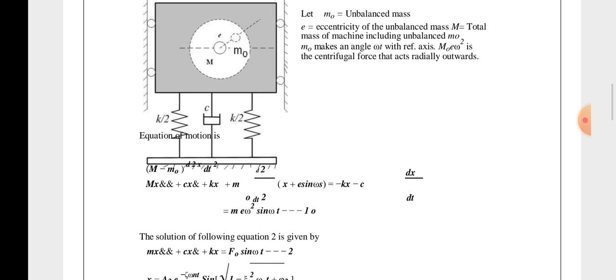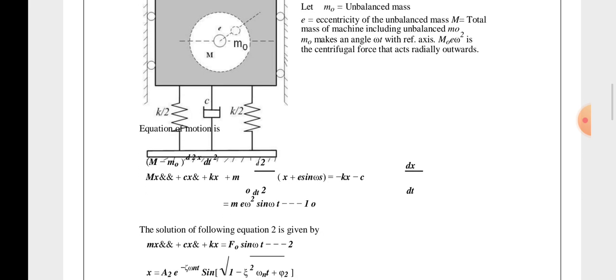Now let's see what is the equation we got. M x double dot plus c x dot plus k x plus m d²x/dt² = M(x + e sin ωt) equals -kx - c dx/dt. So after the finalization...